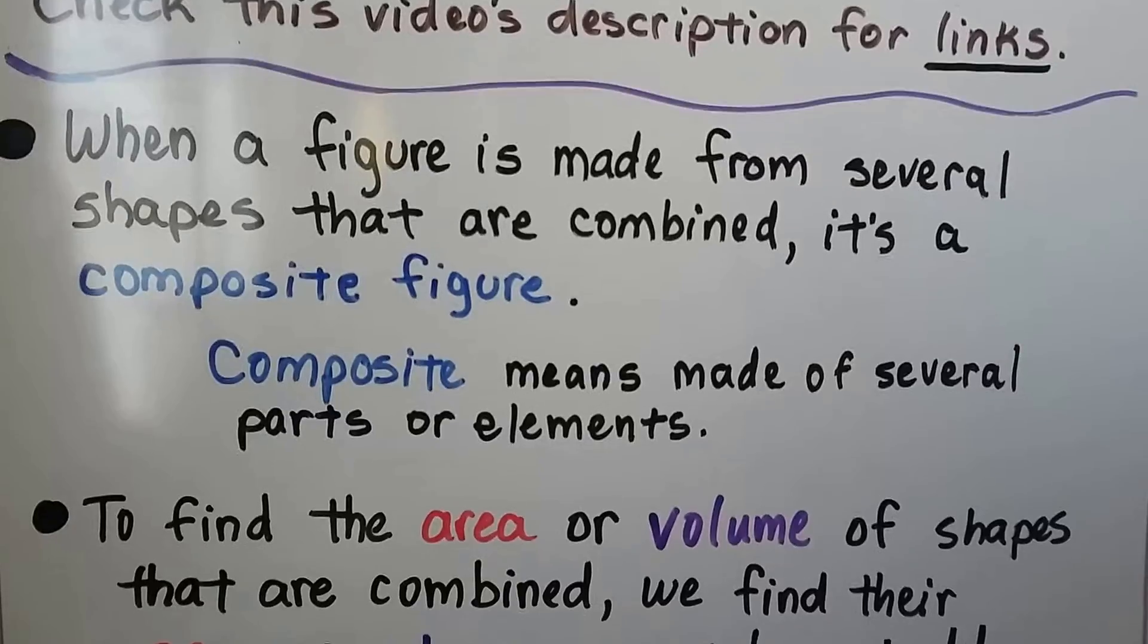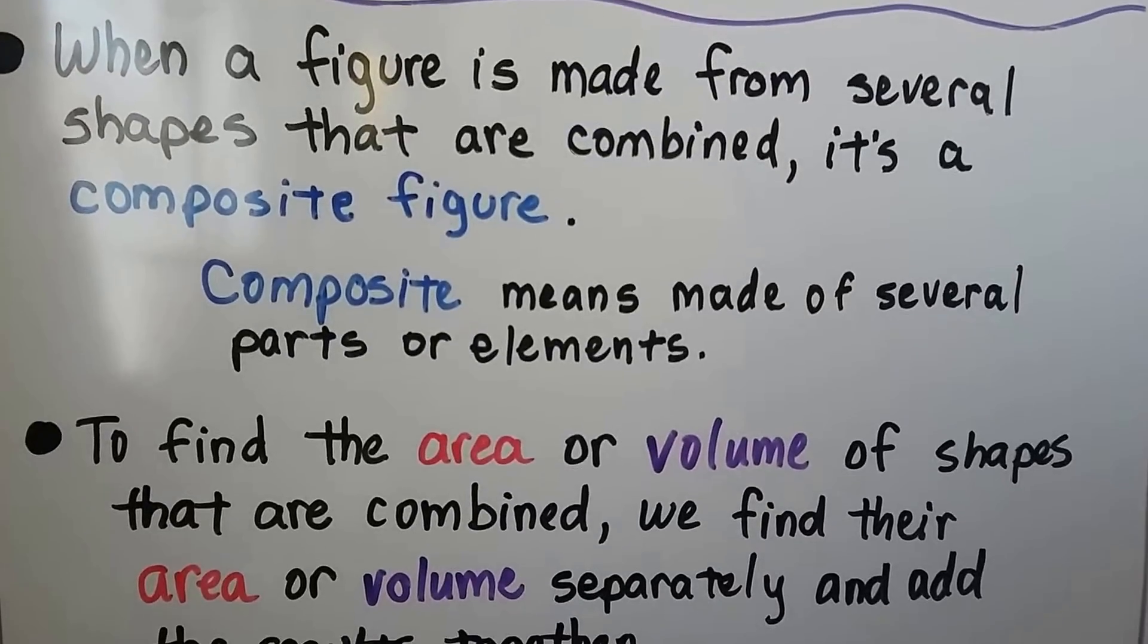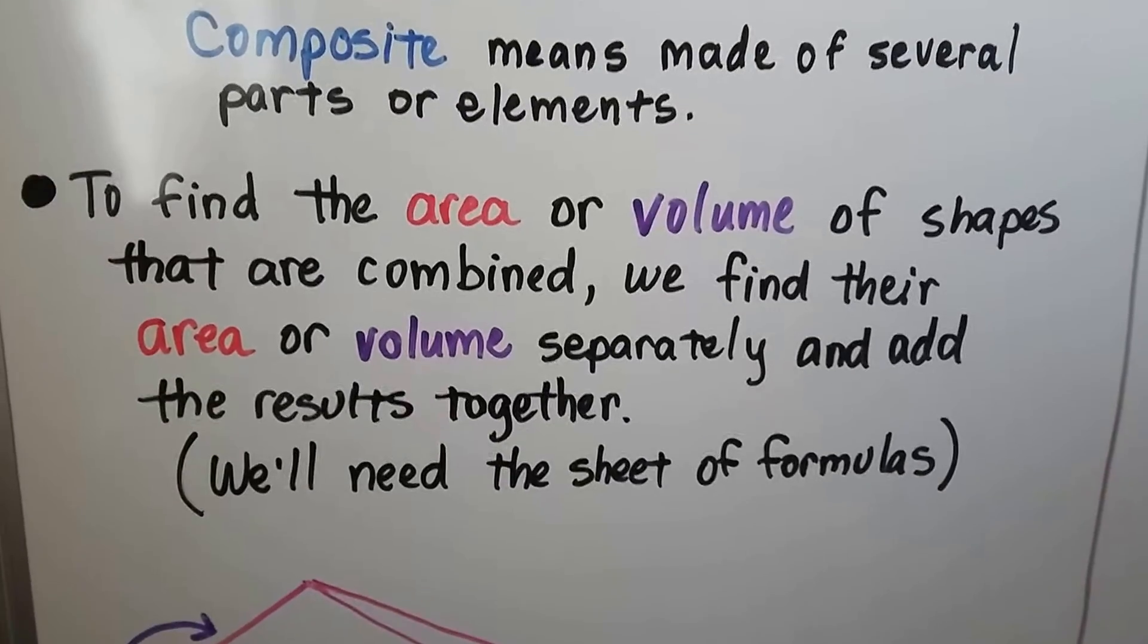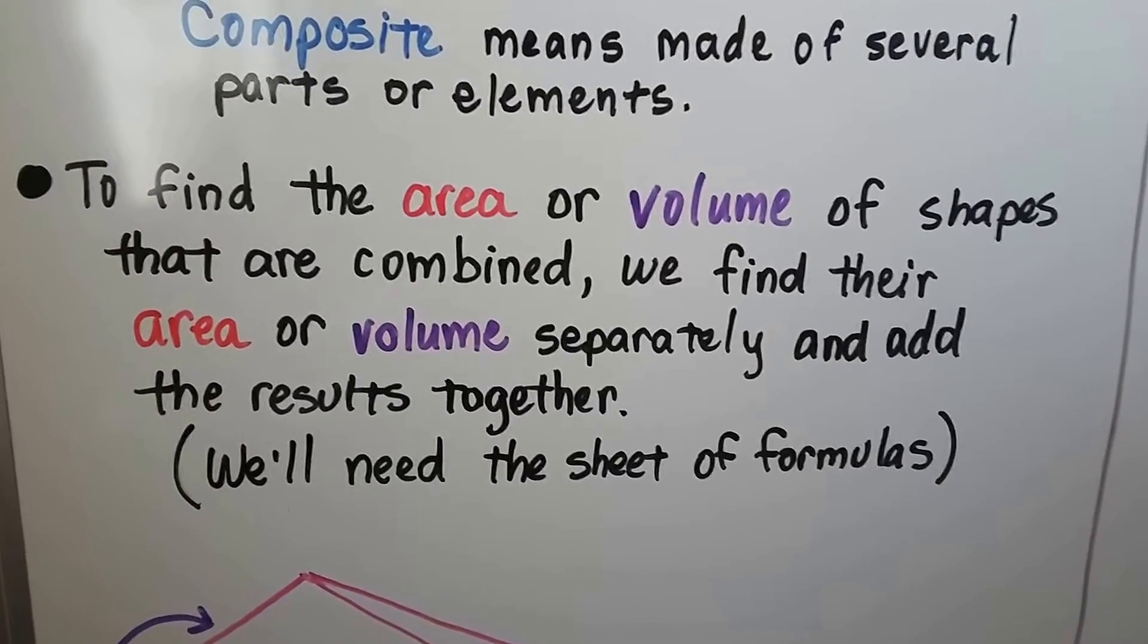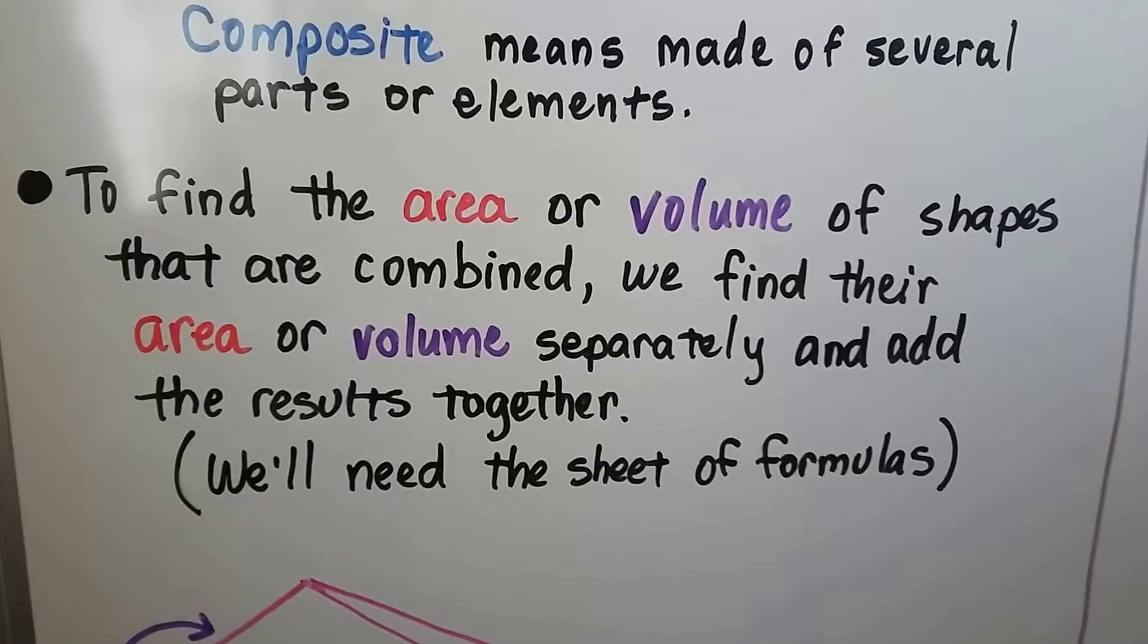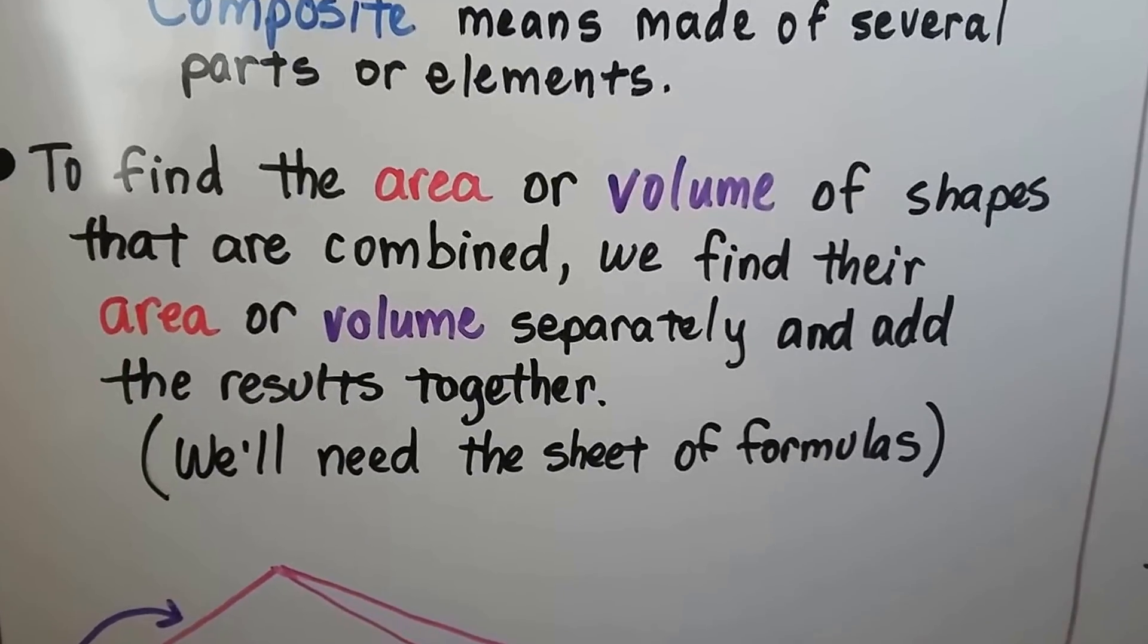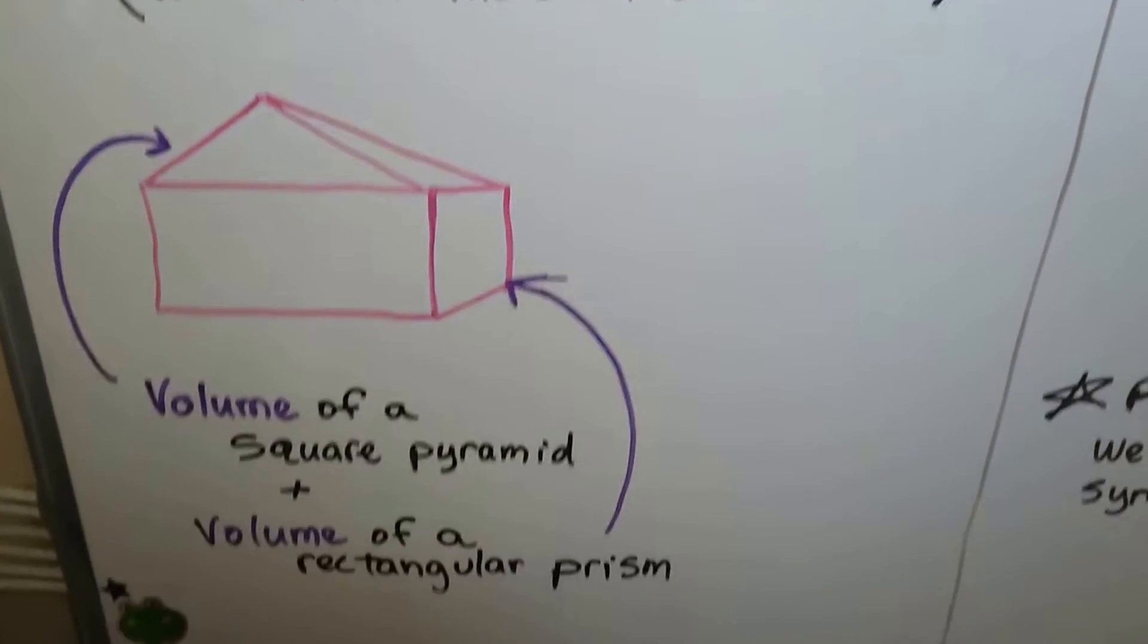When a figure is made from several shapes that are combined, it's a composite figure. Composite means made of several parts or elements. To find the area or volume of shapes that are combined, we find their area or volume separately and add the results together. We're going to need that sheet of formulas that they give you at the beginning of the test.